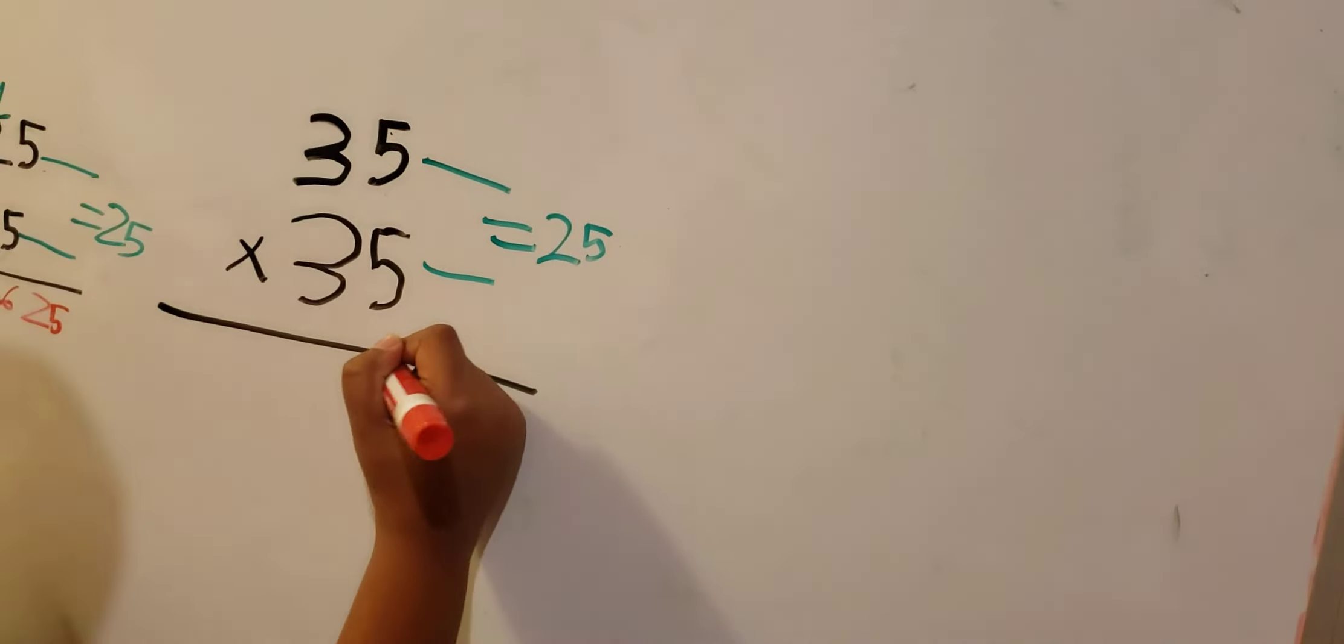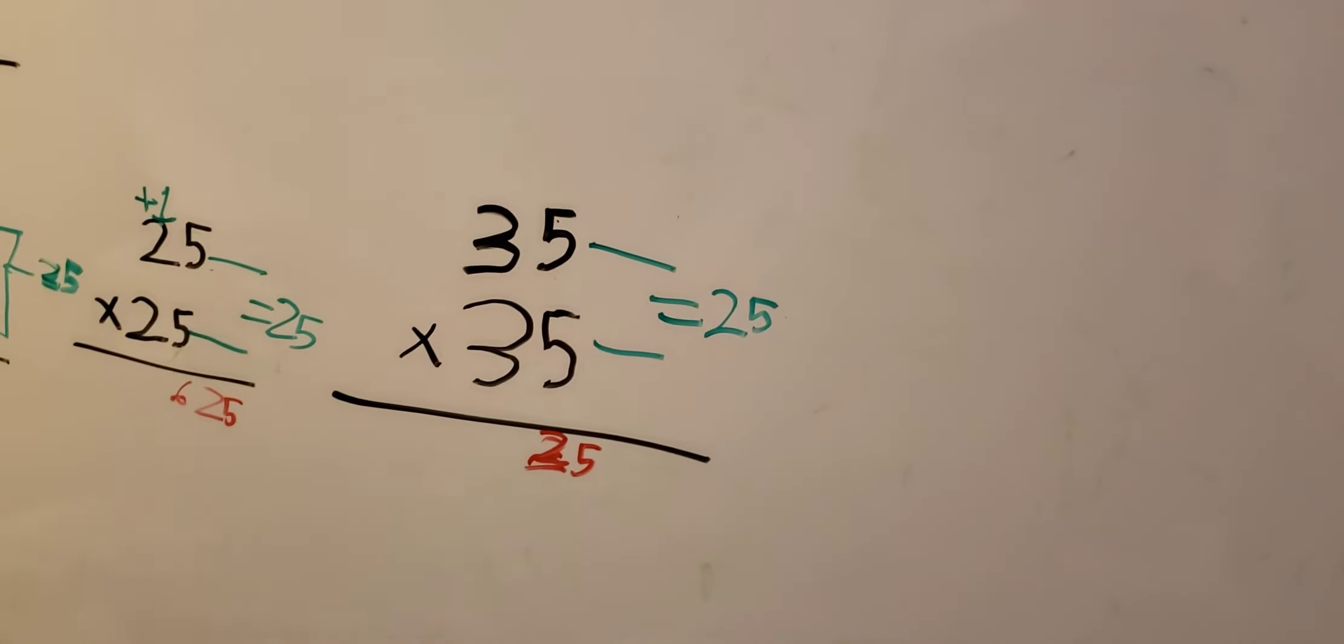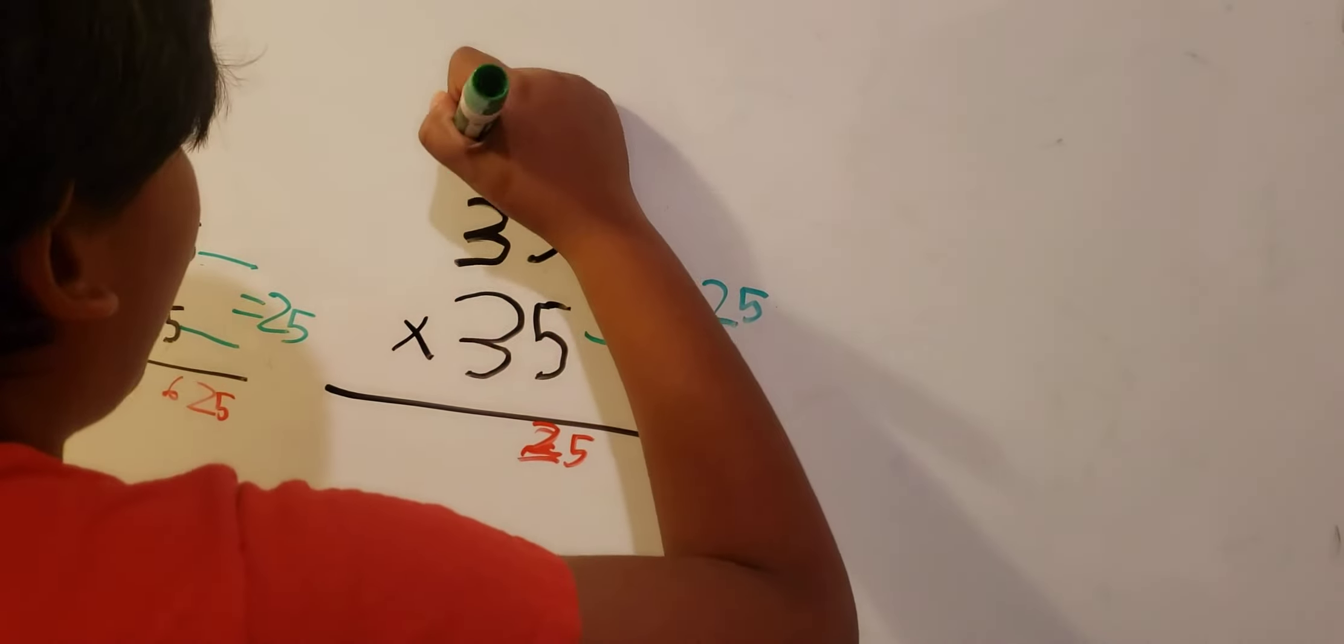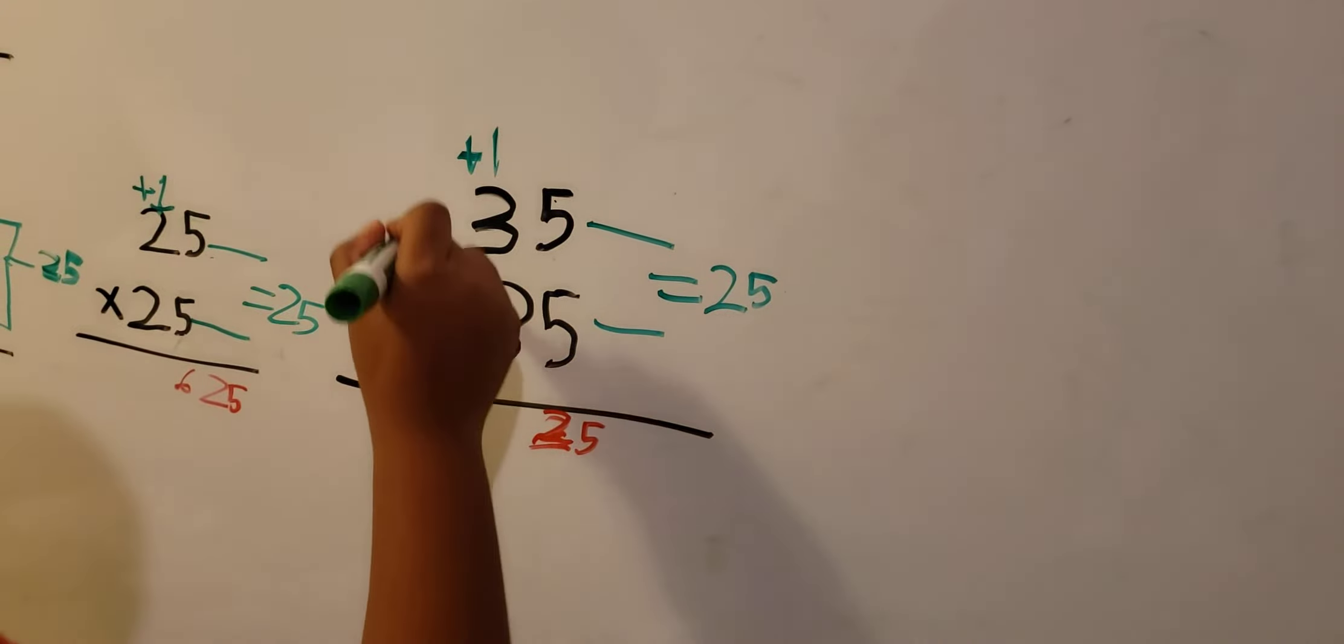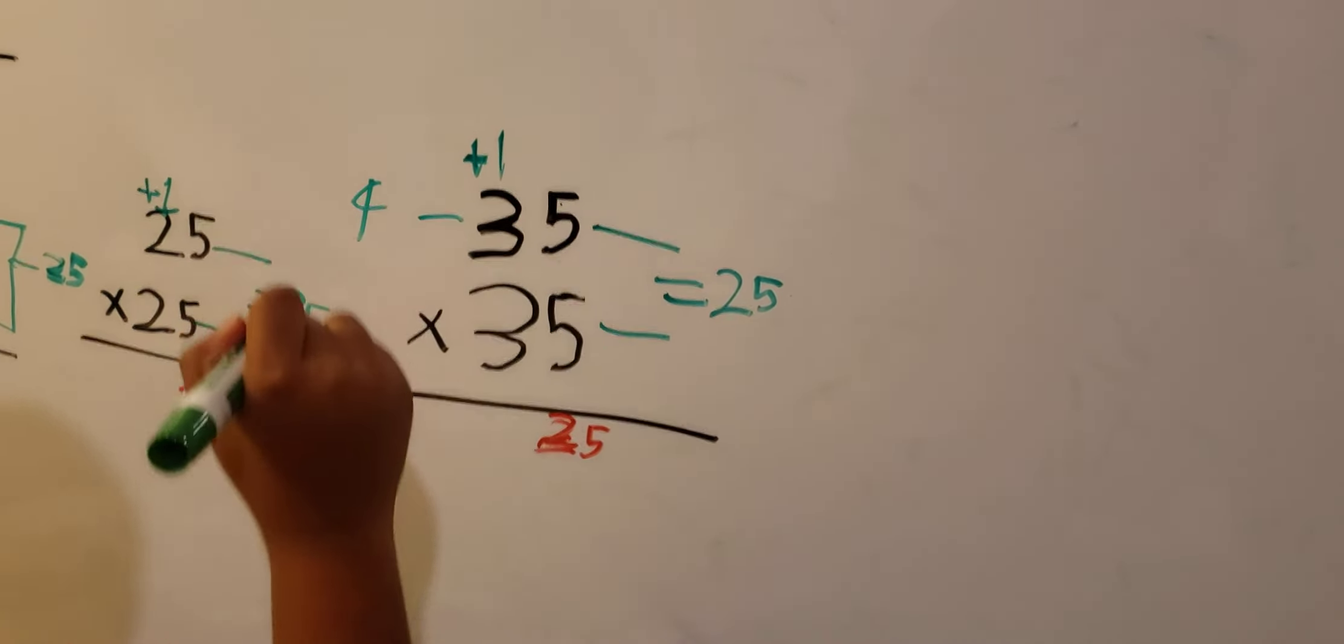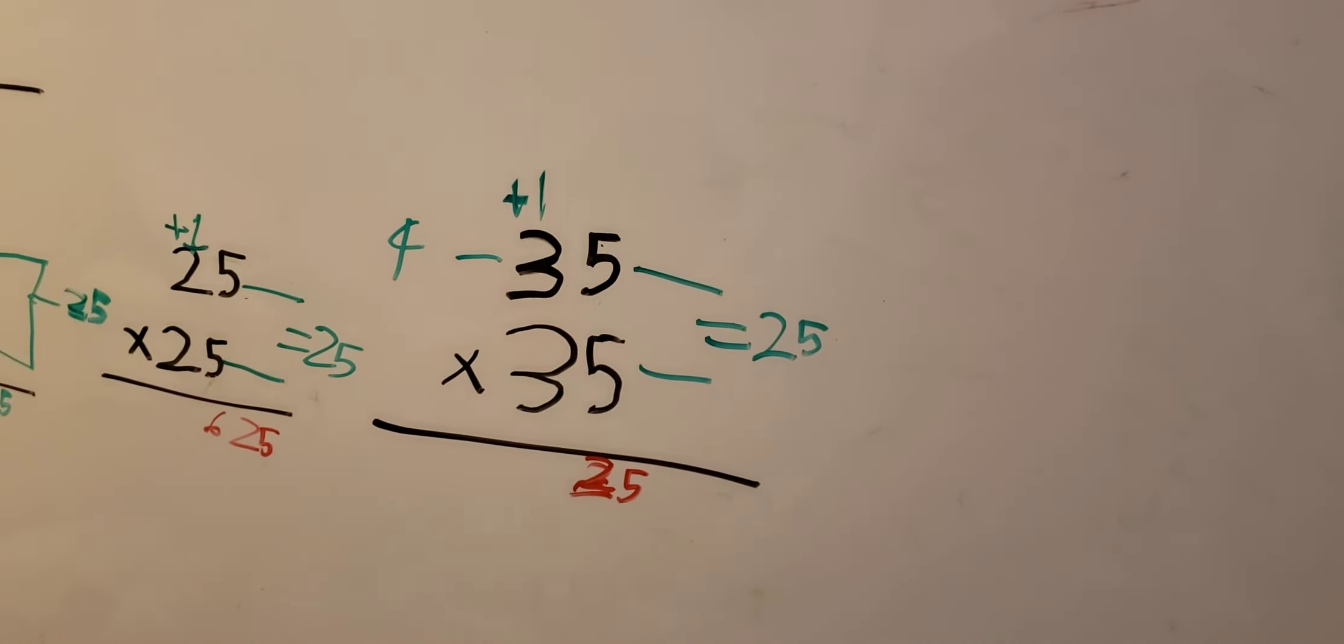Put 25 in the back, and then just add one to make this 4, so that's 4 times 3.